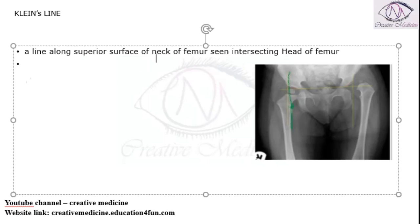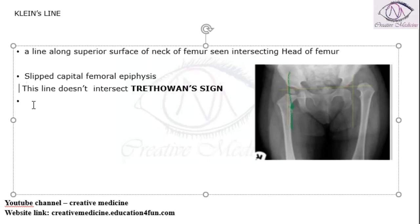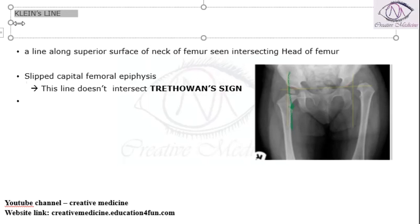This line normally intersects, but in Slipped Capital Femoral Epiphysis (SCFE), this line does not intersect. The sign which occurs due to the non-intersection of this line is called the Trethowan sign.